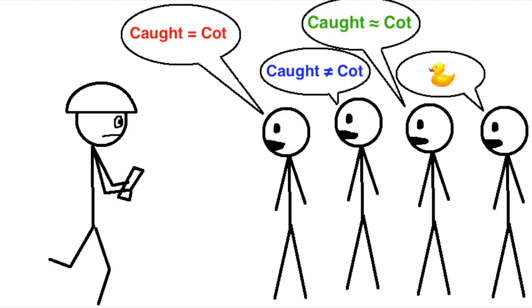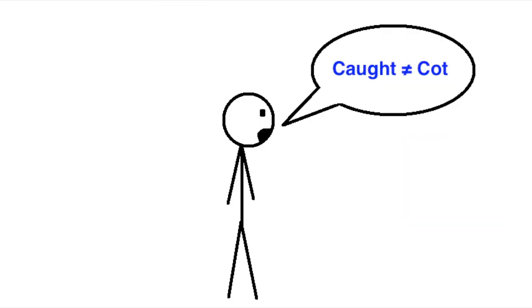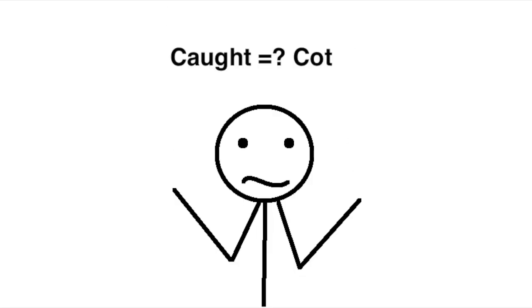A lot of modern research on the merger shows that this kind of variation is really common all over the country. I've read that some people have merged the vowels in some words but not in others, and also that some people say them differently but think they're saying them the same, or vice versa, saying them the same while thinking that they're saying them differently. And yet, all across the US, almost no one even knows that the merger exists.